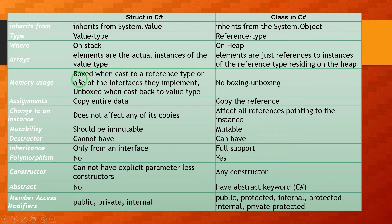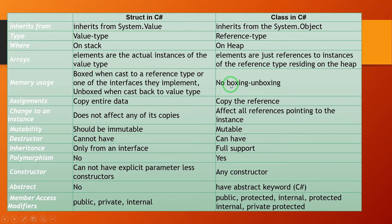Regarding memory and boxing: struct gets boxed when cast to a reference type or one of the interfaces they implement, and unboxed when cast back to the value type. In the case of class, there is no boxing and unboxing concept. If you are new to boxing and unboxing, you can check the playlist — there is a video on the difference between boxing and unboxing in C#.